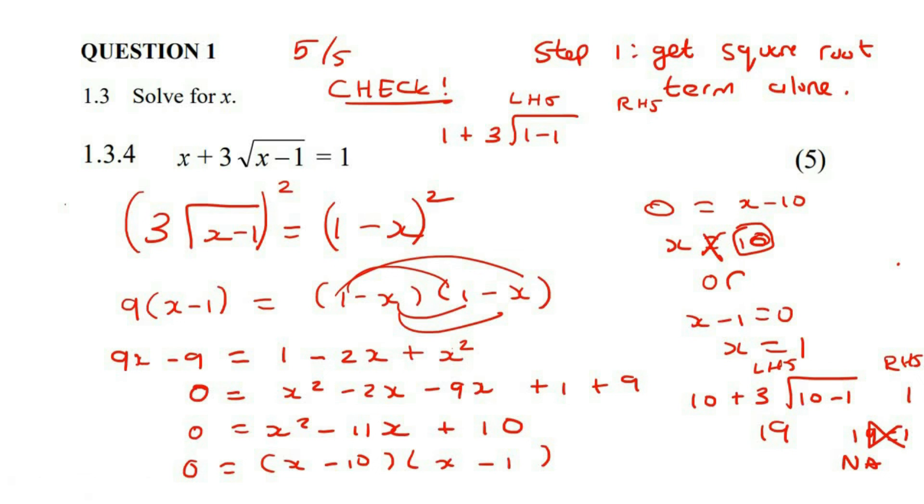So if you work out the left hand side, then you end up with 1, if you had to go work that out. And then on the right hand side, you also end up with 1. And so these two sides are equal. And so x equals to 1 is a valid answer.